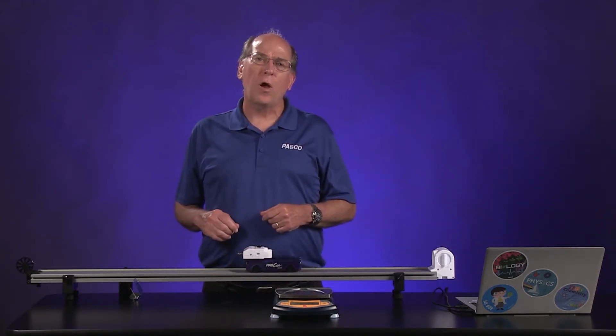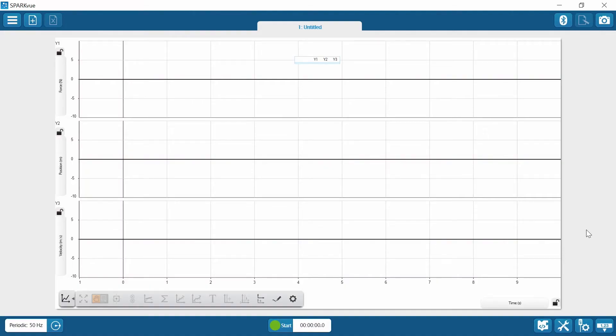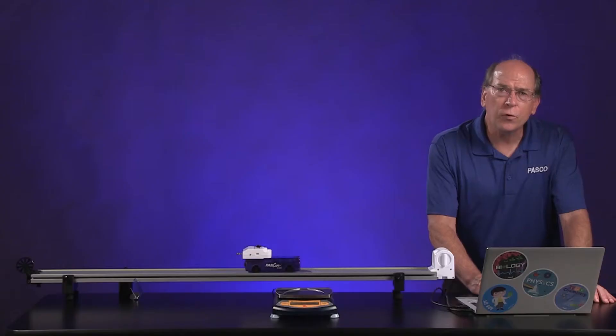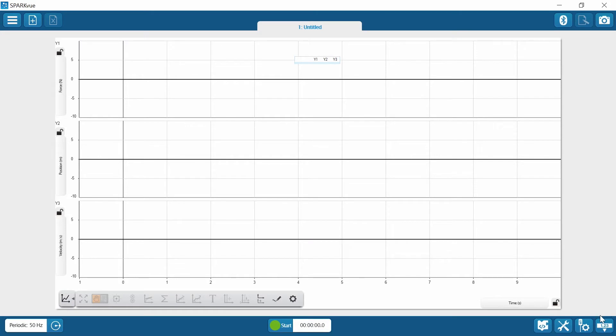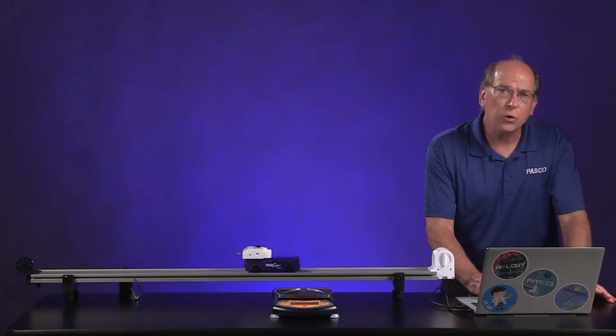Let's open the data collection software. In this case, SparkView. We've opened it up and we have connected the force sensor and the motion sensor. We've increased the data collection rate to 50 hertz. That should work well.